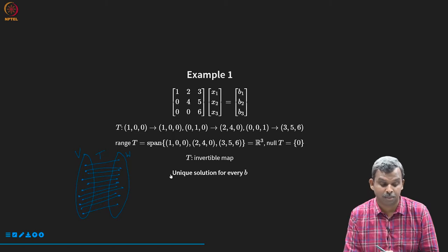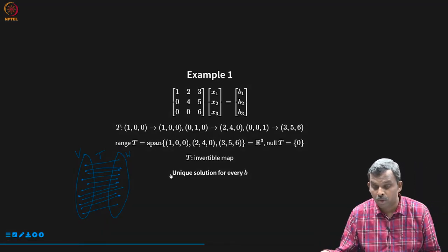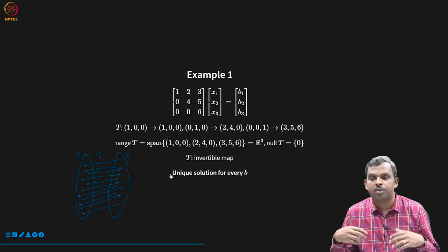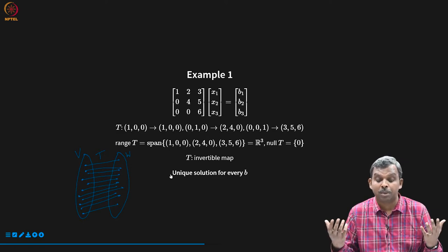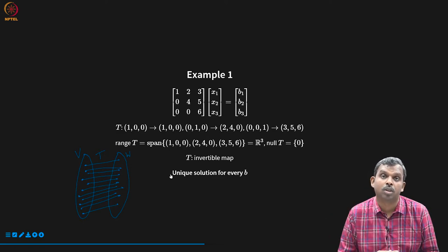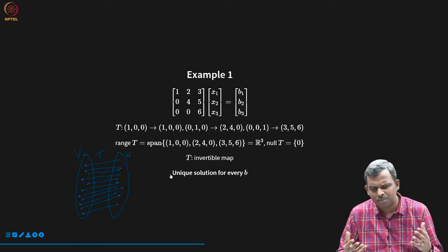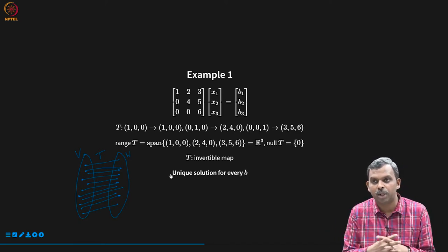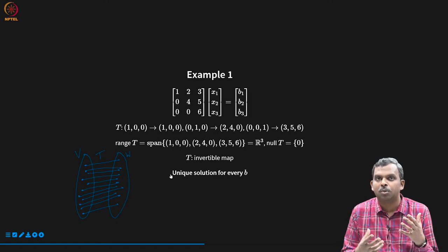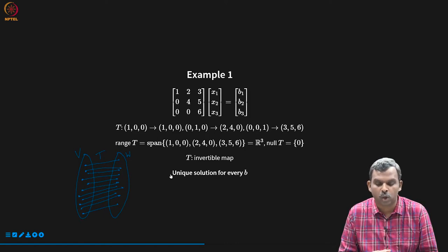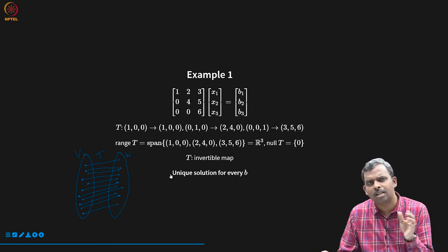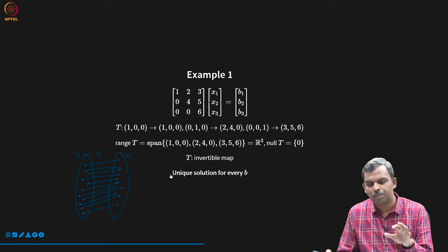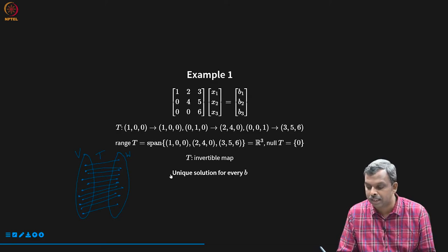That is a nice statement we made. Notice what we were able to do: we looked at the matrix, inferred properties of the linear map, inferred properties about how the linear map works, and then we were able to make statements about the solution. This can give you more insight into what is going on. Let us now complicate the examples a little more and look at other types of linear maps, but we will keep them sort of upper triangular to make our work easy.